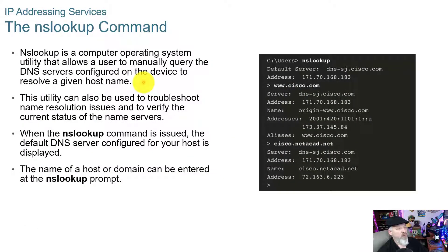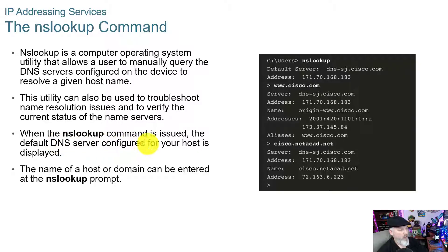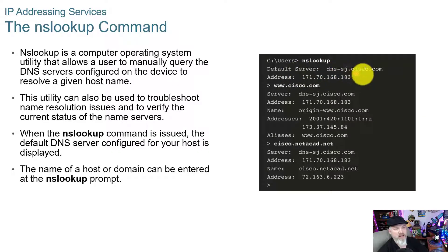A second-level domain would be something like cisco.com, and then subdomains such as ftp.cisco.com or mail.cisco.com. The nslookup command is a computer operating system utility that allows a user to manually query DNS servers configured on the device to resolve a given host name. It can also be used to troubleshoot name resolution issues and verify the current status of name servers. When the nslookup command is issued, the default DNS server configured for your host is displayed. For example, doing an nslookup shows the default server as dns-sj.cisco.com and returns the IP address, or you can enter cisco.com and it will return the server name and address.